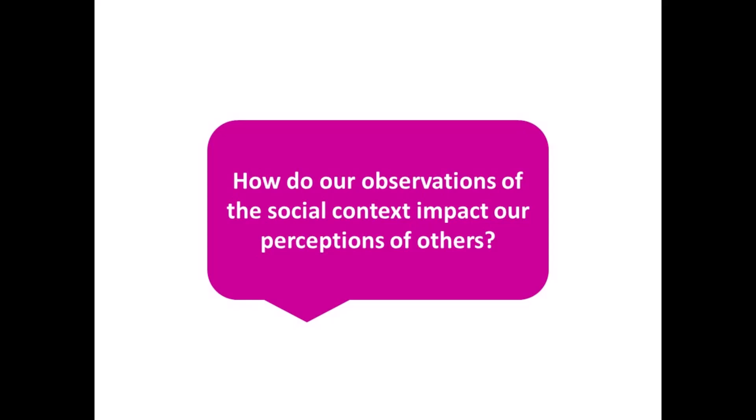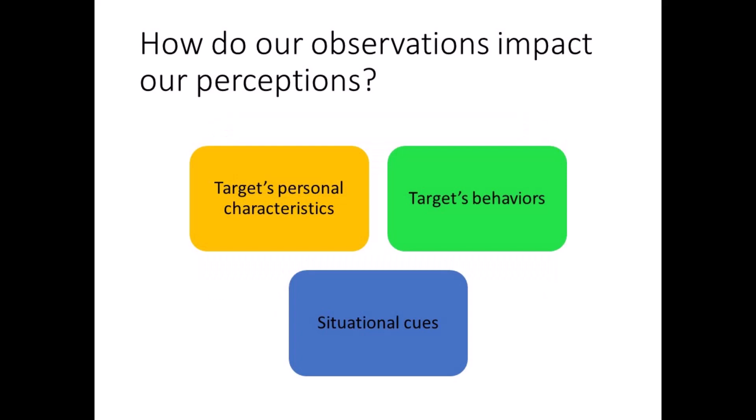How do our observations of the social context impact our perceptions of others? Social perception starts with the perceiver who makes observations of the target. They are considered the target because they are the focus of our social perception. Social psychologists consider observations to be the basic elements of the whole process. The raw data we observe includes the target's personal characteristics, their behaviors, and cues from the environment. We'll cover each of these factors in this part of the lecture.